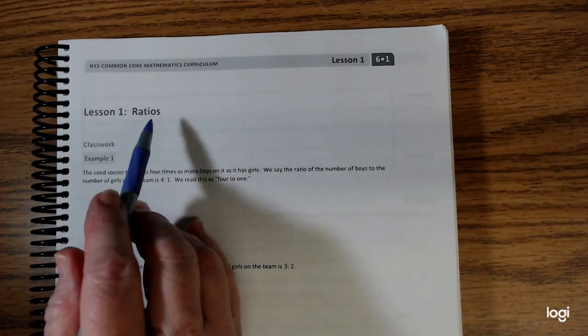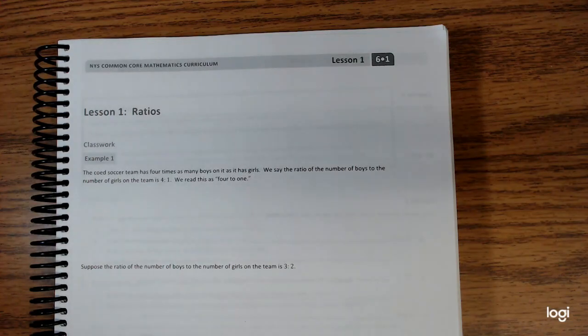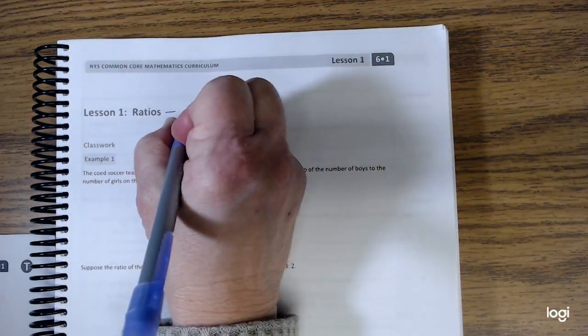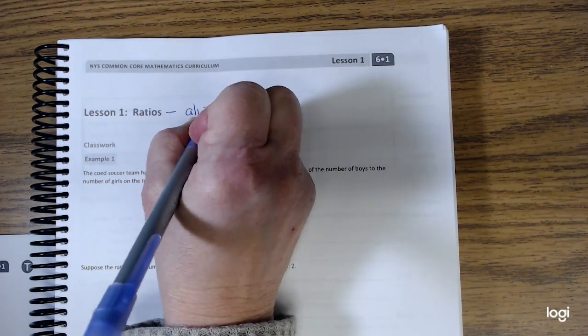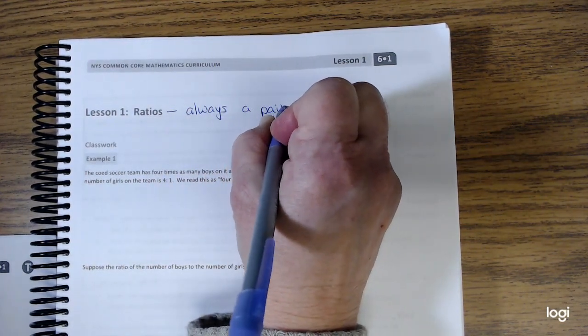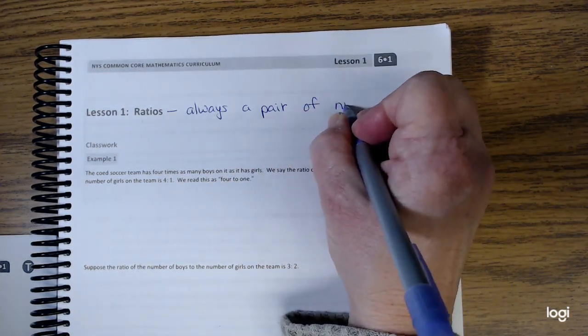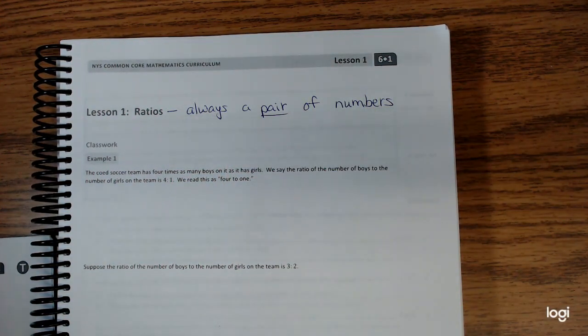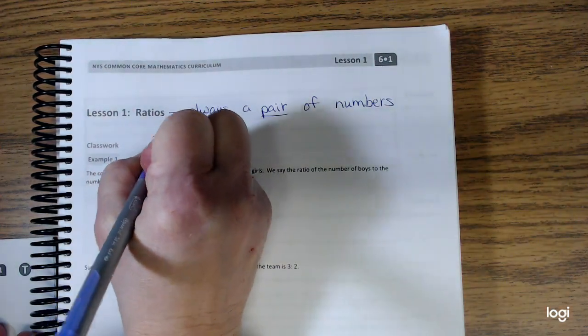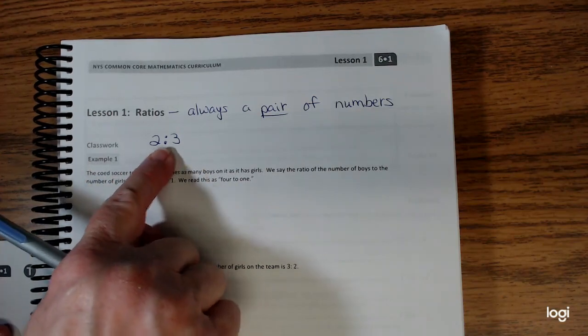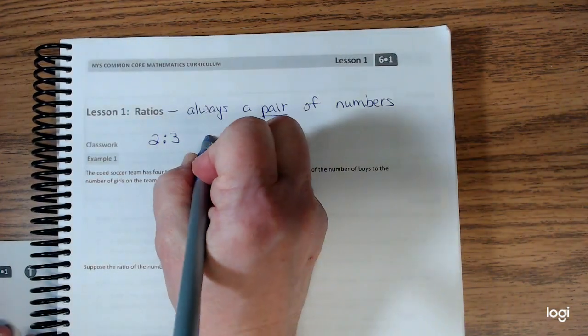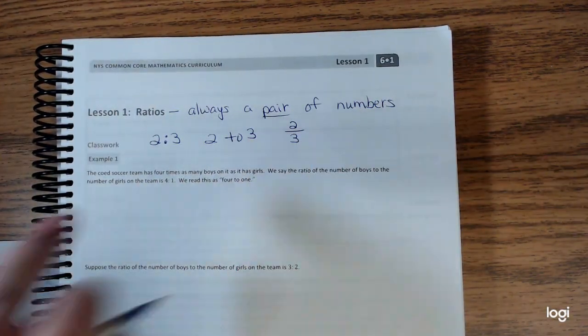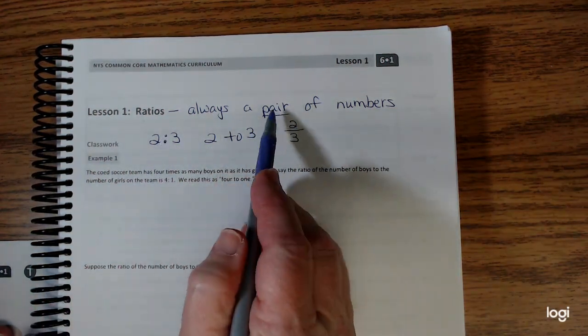Today we're going to talk about ratios. The most important thing you need to know is that ratios are always a pair of numbers. A pair consists of two. For example, my two numbers could be 2 to 3. We have to separate them somehow. We can put a colon here, we can also do 2 to 3 with the word 'to', and you could also put the two numbers as a fraction. Remember, ratios are a pair of numbers. Pretty simple.